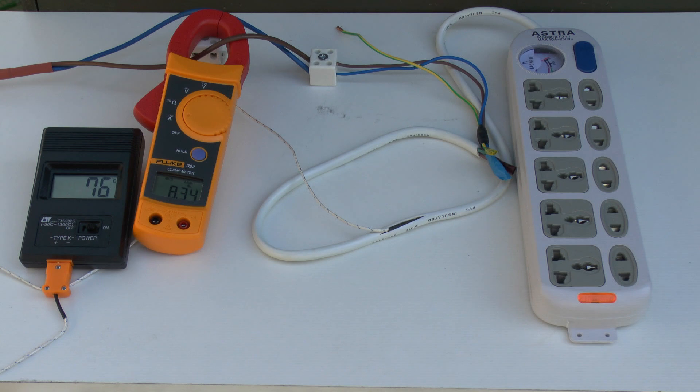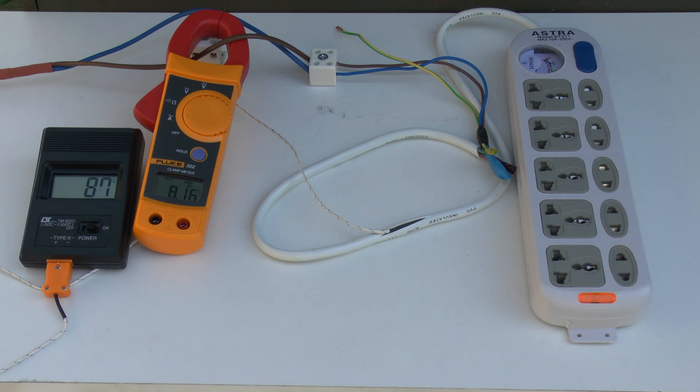Okay we're just over 8 amps at 8.35 and you see the temperature is climbing rapidly. We're now up to 80 centigrade. That's exceeding the rating for standard PVC insulation which is normally around 70.